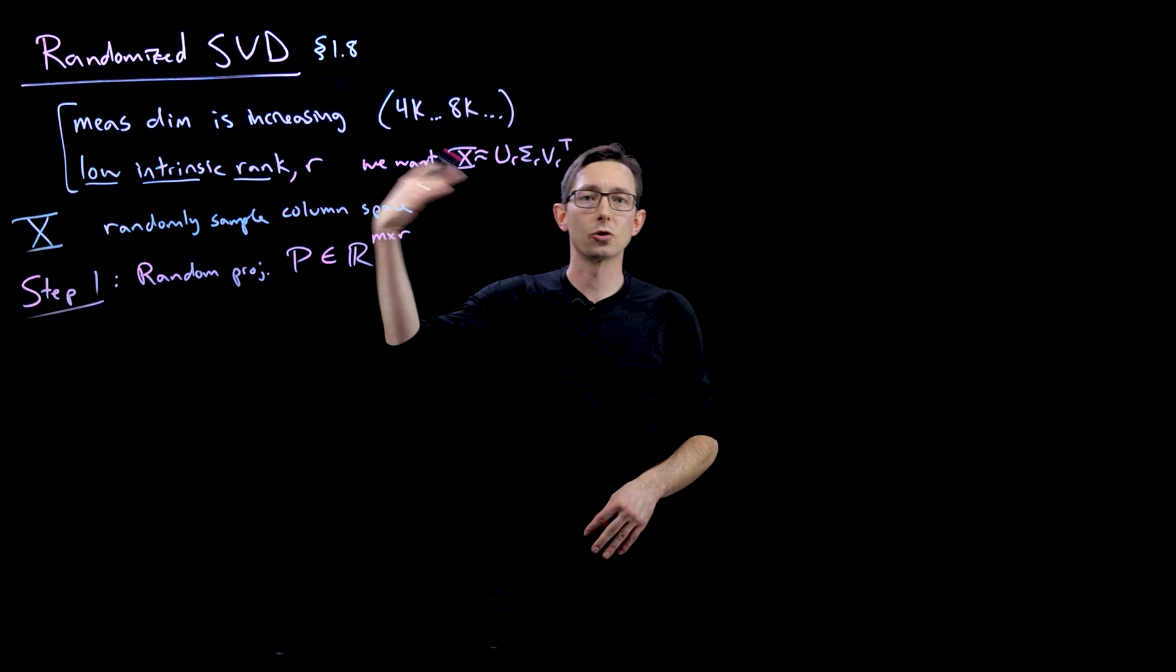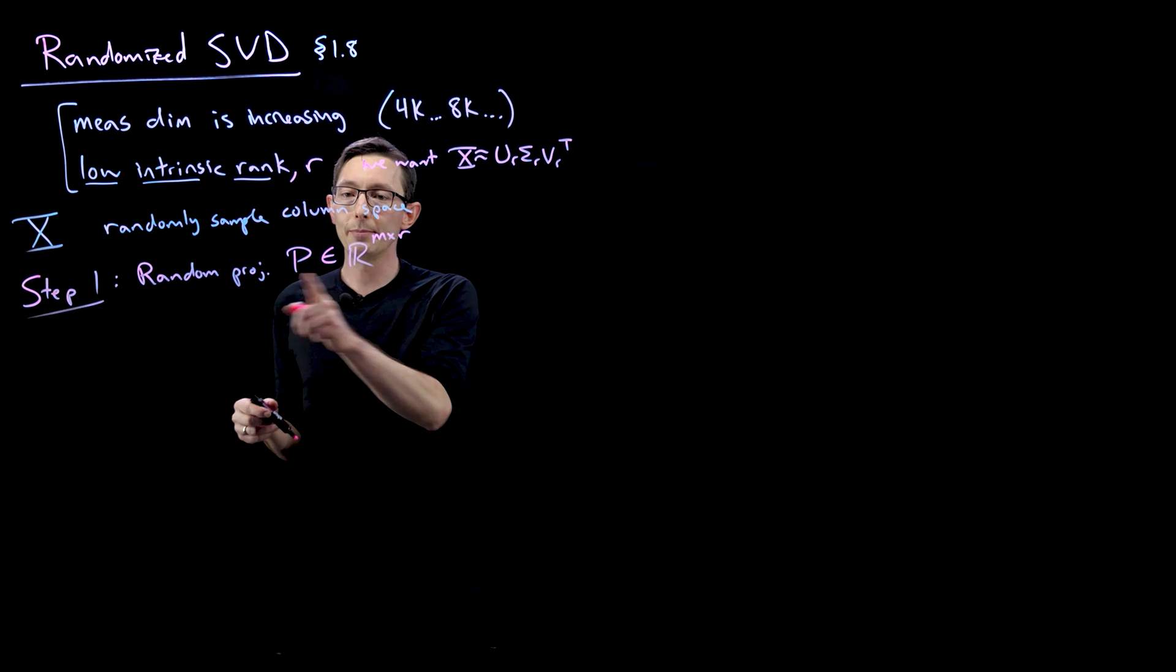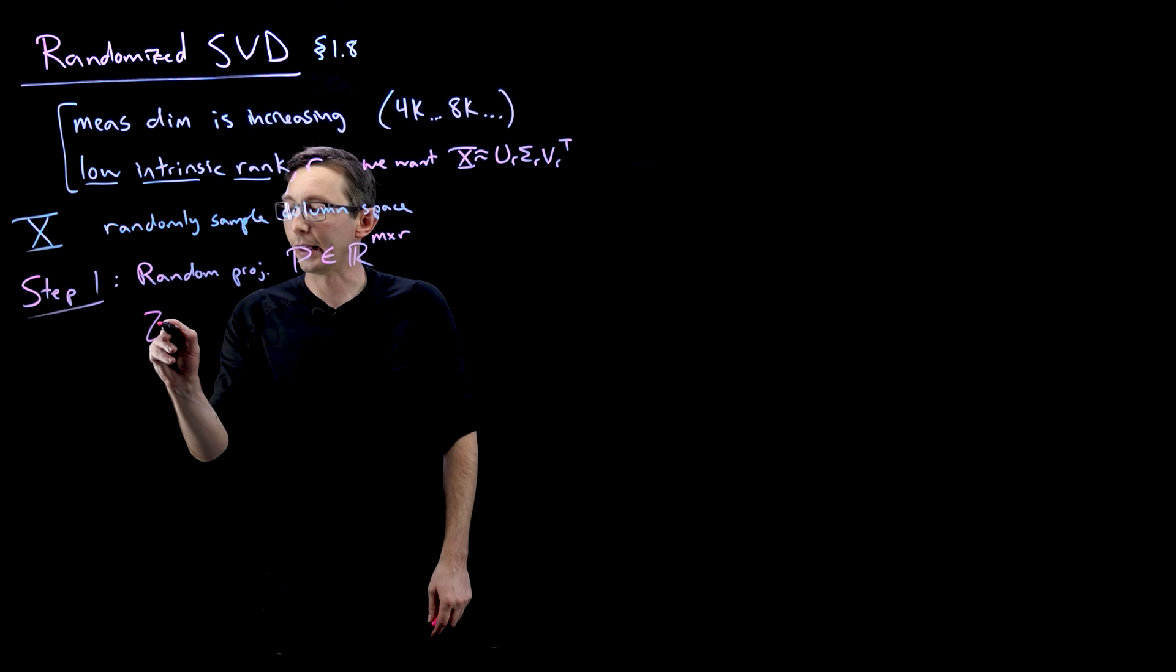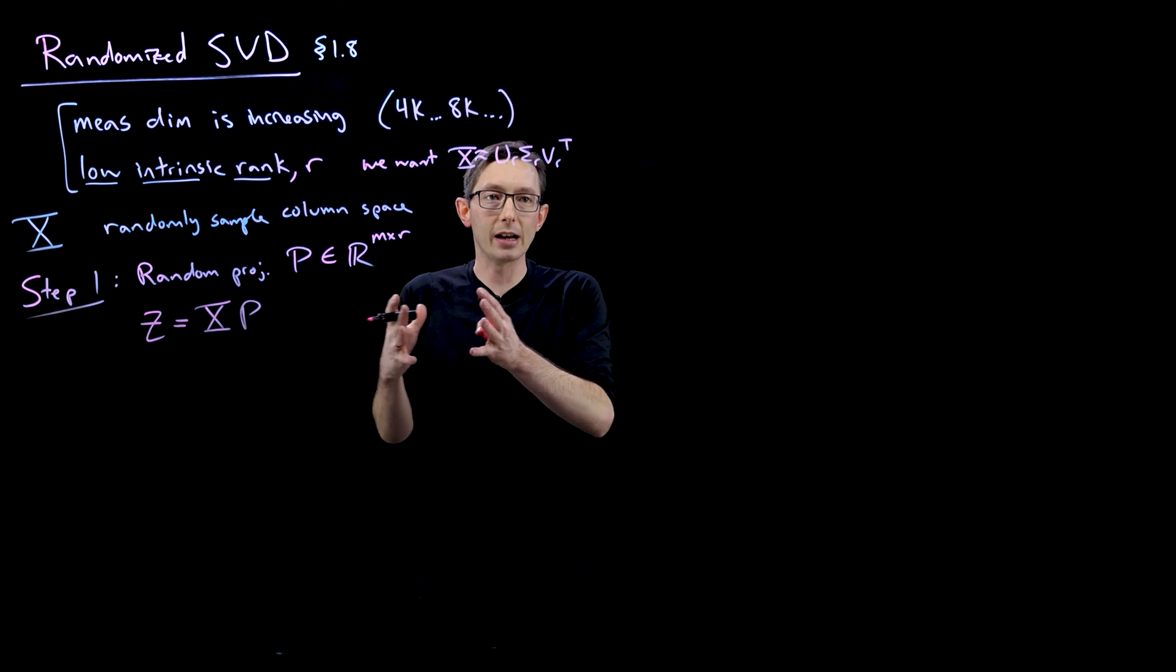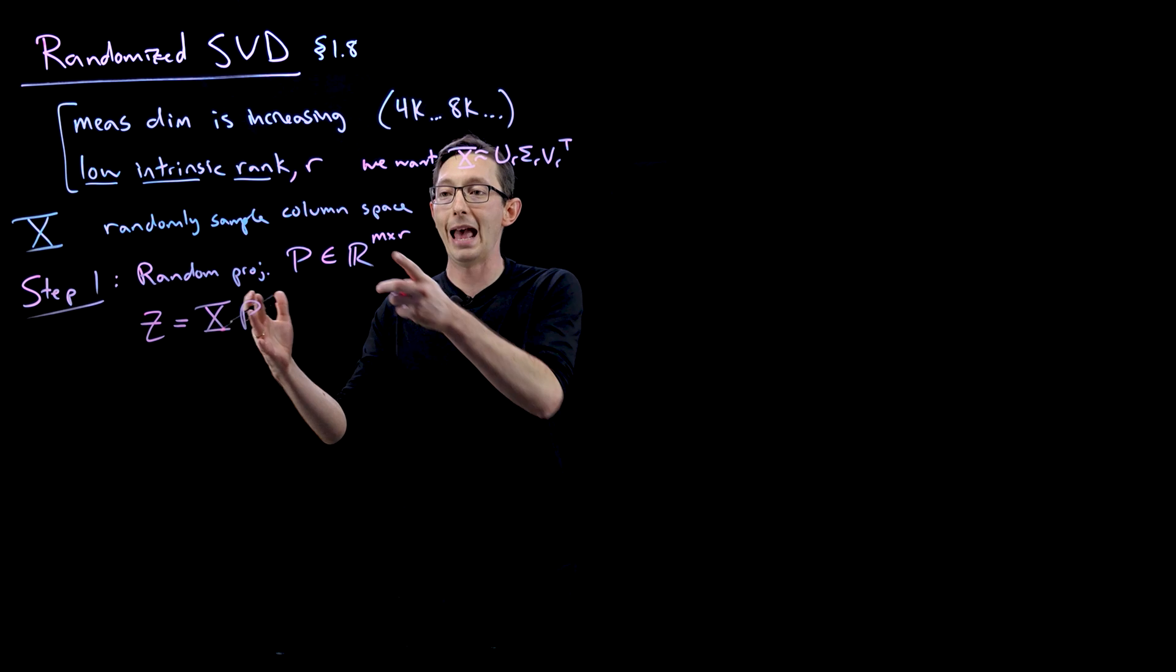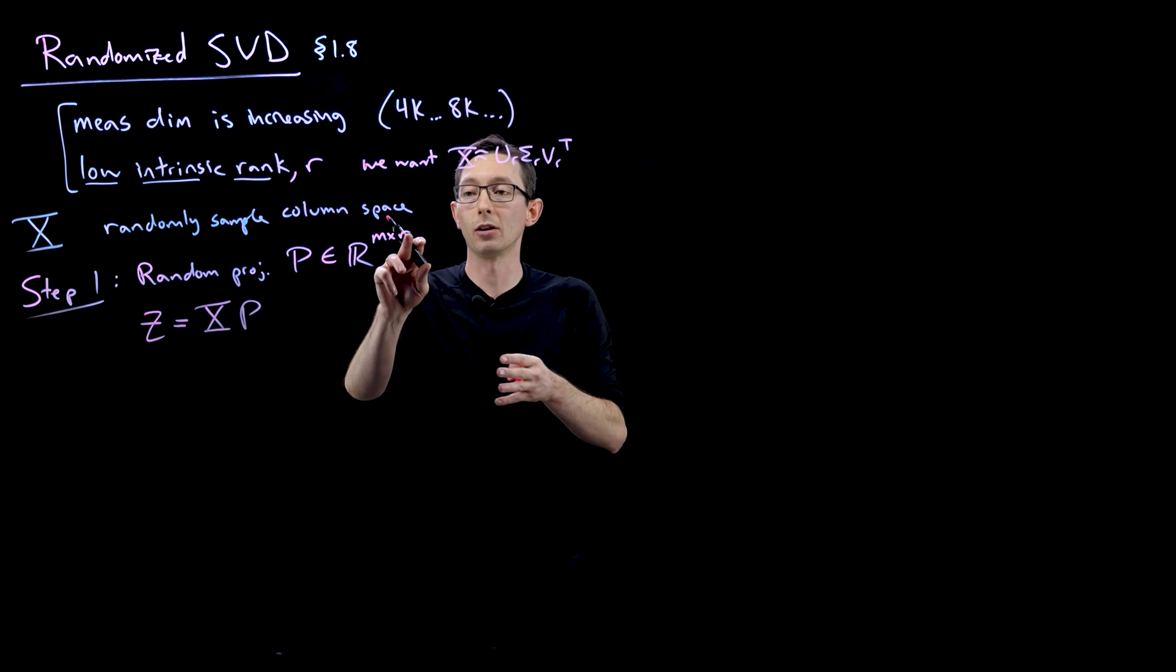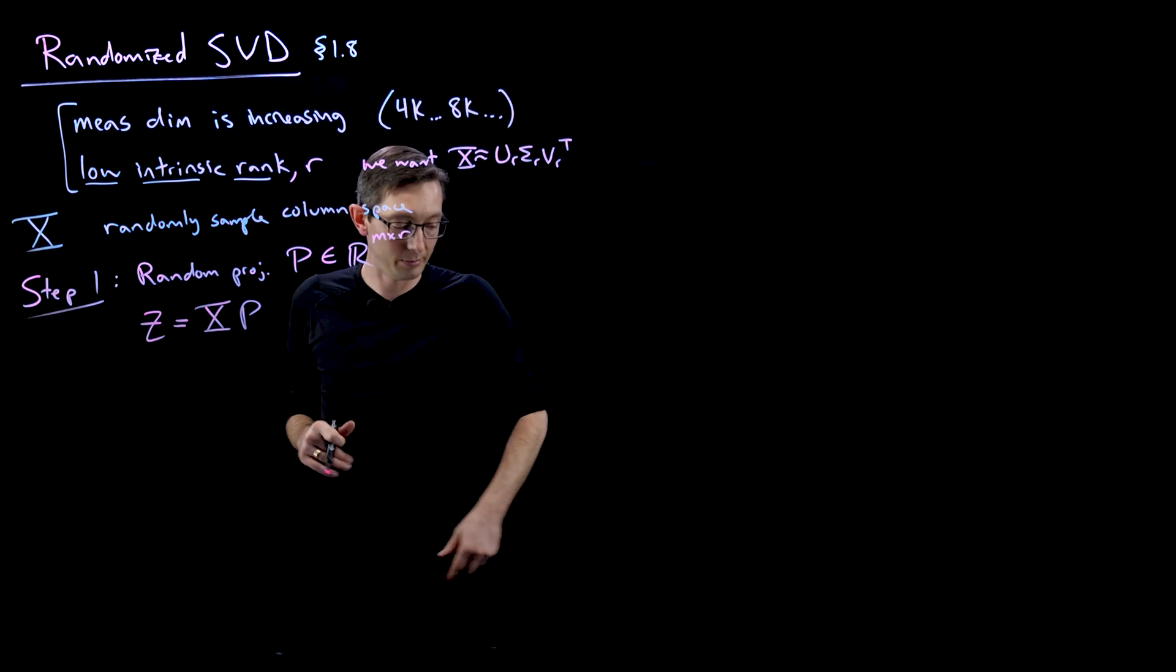Maybe R is 10 or 20, even though X is very, very large. So we're going to build this random projection matrix P. And we're going to multiply X on the right by P. And it's going to shrink the column space down from M to R. So M might have been 1,000 columns and R might only be 10 modes that we want. So it's going to be a big reduction in the column space.